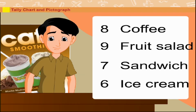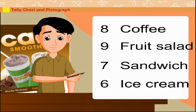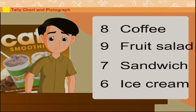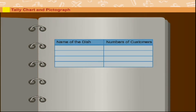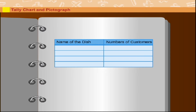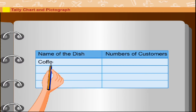Sarket used to keep a record of items sold each day. Let us see how Sarket kept the record of items sold on that particular day. He drew a table of two columns.